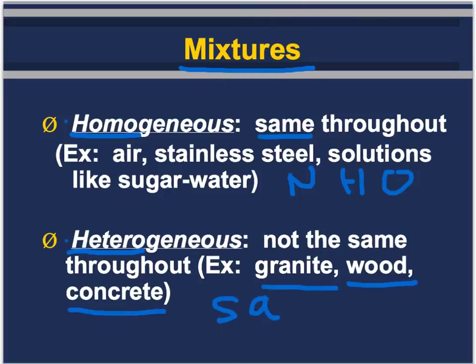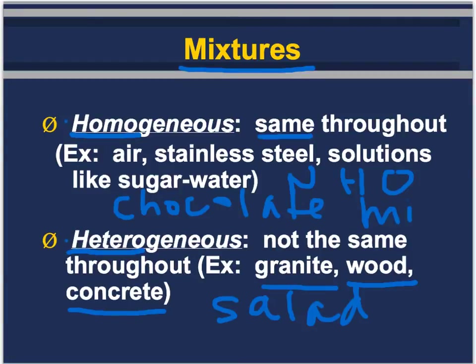For example, a salad is a good heterogeneous mixture. For homogeneous, I might use chocolate milk — the idea being that if you let your milk sit long enough, the chocolate would come out of solution.